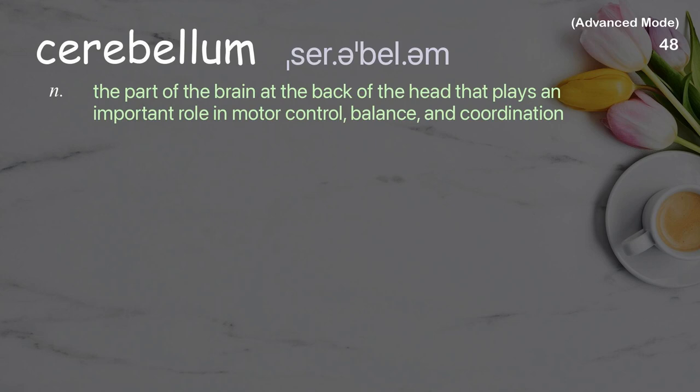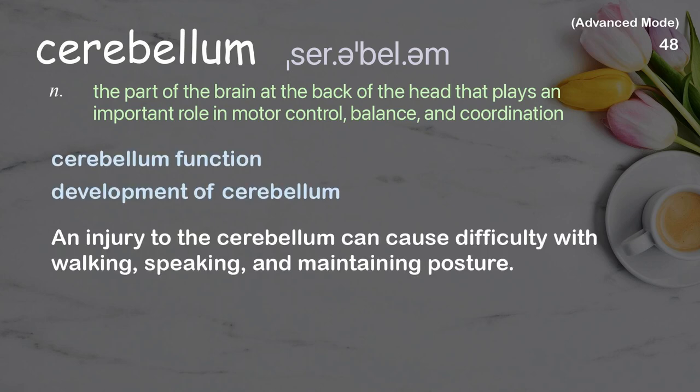Cerebellum: the part of the brain at the back of the head that plays an important role in motor control, balance, and coordination. Examples: cerebellum function, development of cerebellum. An injury to the cerebellum can cause difficulty with walking, speaking, and maintaining posture.